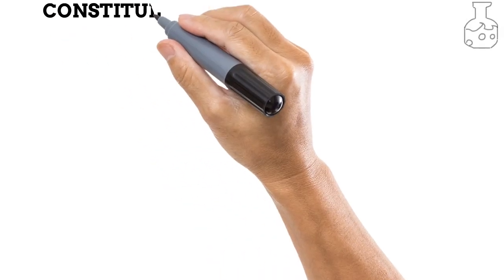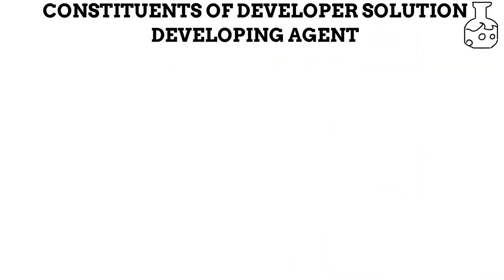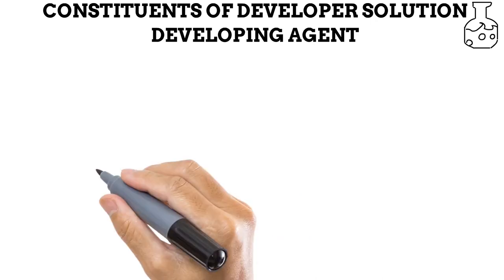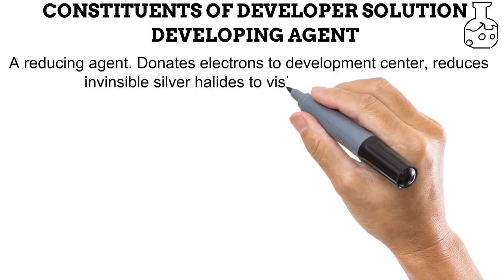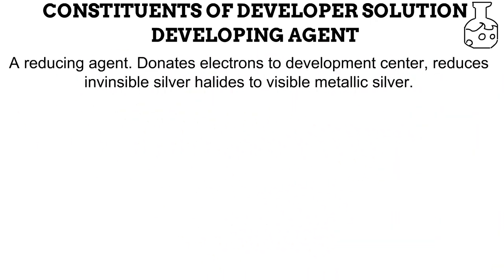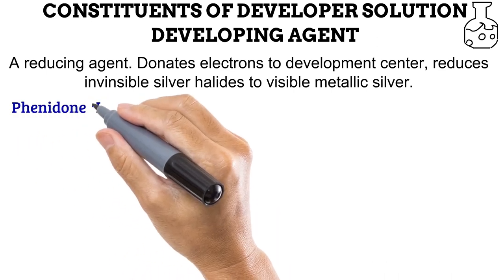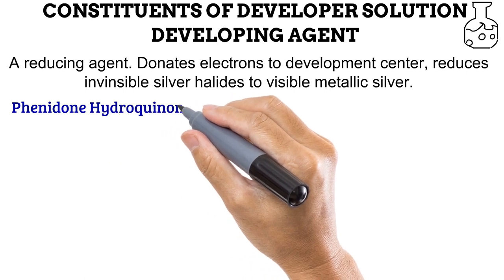The developer solution is made of multiple constituents which aid its function of transforming a radiographic image from invisible to visible. The first is the developing agent — the main or active ingredient which performs the function of reducing invisible silver halide grains to visible metallic silver. It is the reducing agent we spoke of earlier. While there are many types in use, the most common developing agent is phenidone-hydroquinone.